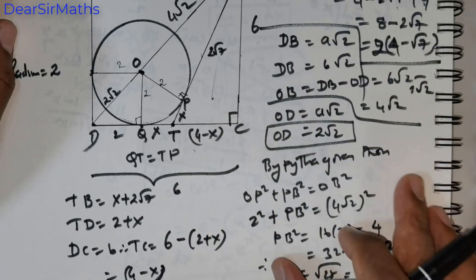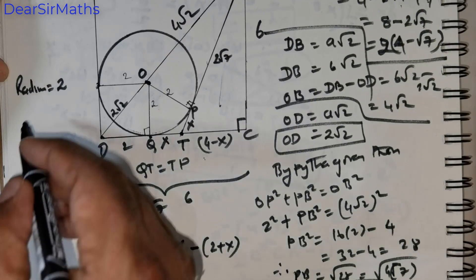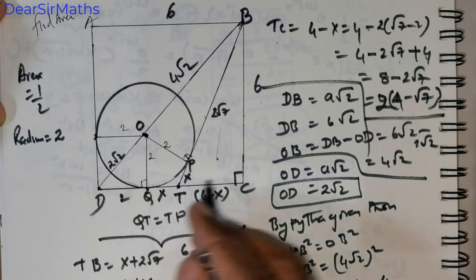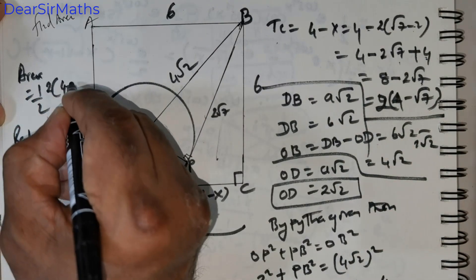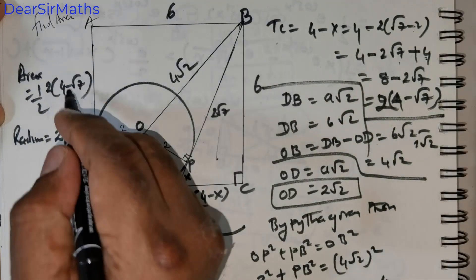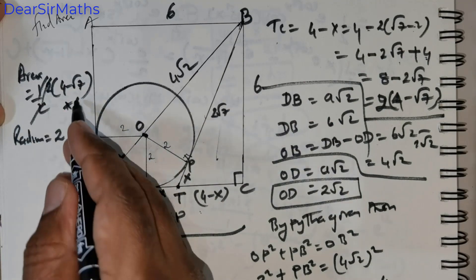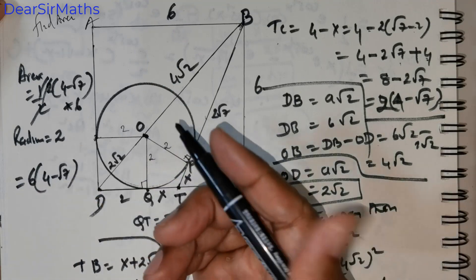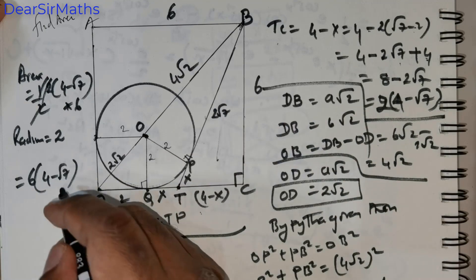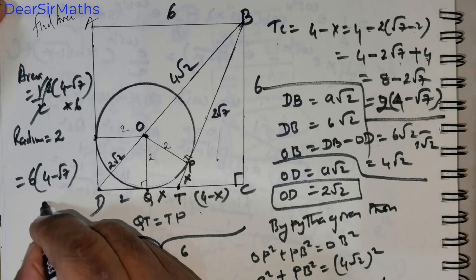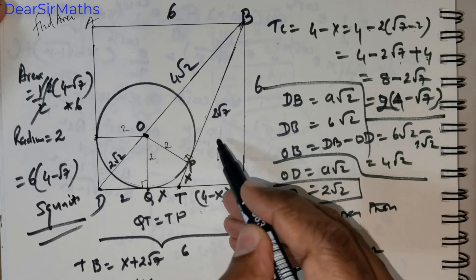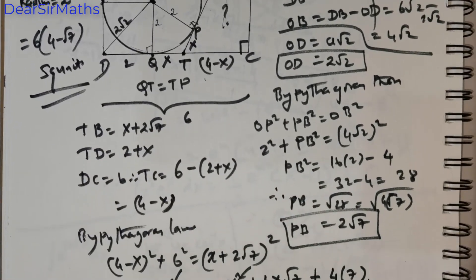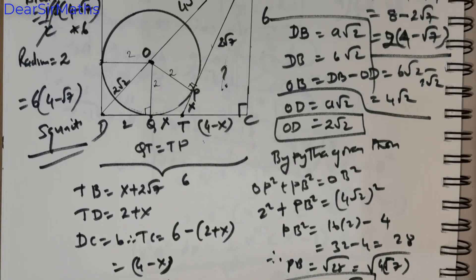All I need to do now is find the area. Area of the triangle equals half times base times height. My base is 2(4 - √7) and my height is 6 units. So area = ½ × 2(4 - √7) × 6. The 2 cancels, giving area = 6(4 - √7) square units. That is the required area of the triangle. This is a beautiful question involving many concepts in geometry. Thank you everybody, I hope you enjoyed this question.